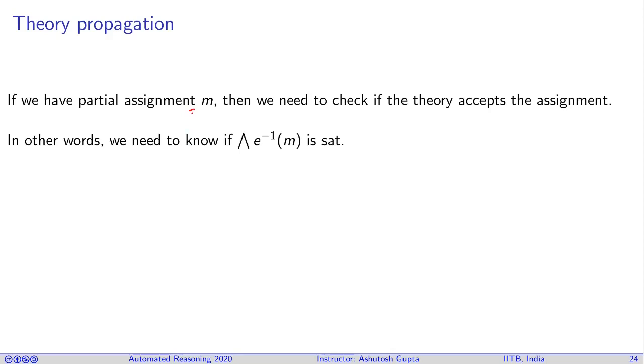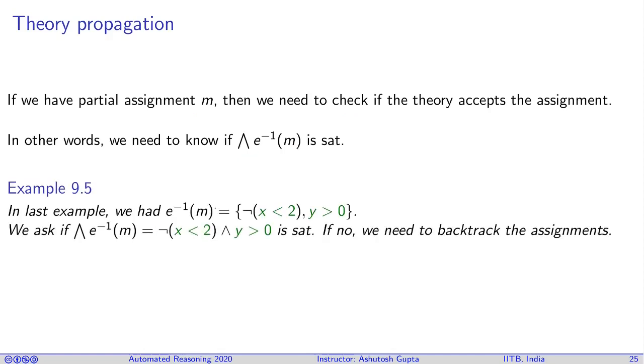If you have a partial assignment m, we need to check if the theory accepts the assignment. Suppose, as in the previous example, we are given values to x1 and x2. We want to know if the theory agrees with our choice of assignment. In other words, is the conjunction of e inverse of m actually satisfiable or not? In this example, e inverse of m would be these two atoms or their negations. We take the conjunction and get this conjunctive formula, and we can use theory reasoning to check if it is satisfiable.